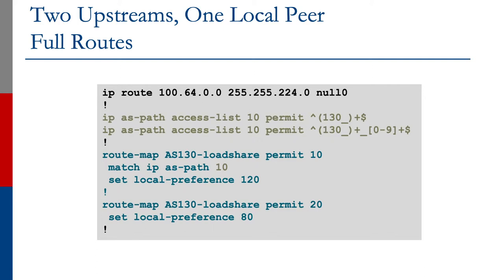We've matched prefixes and we're going to set local preference to 120. If the prefixes do not match this ASPath, we move on to the second line, which says any prefixes we learn from AS130 should be set to local preference 80, making this path unimportant. So prefixes originated by AS130 and AS130's immediate neighboring ASes will be set with local preference 120, and everything else will be set to local preference 80. This means traffic to AS130 and its immediate neighbors goes out through router C, and everything else goes out through router D.